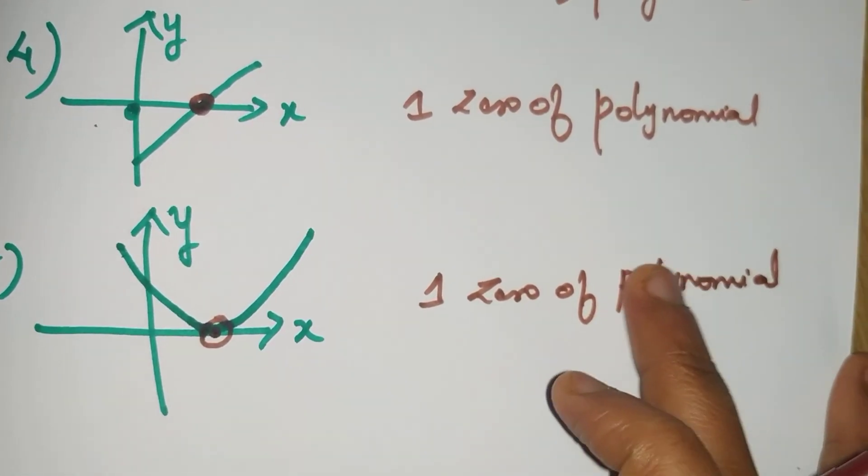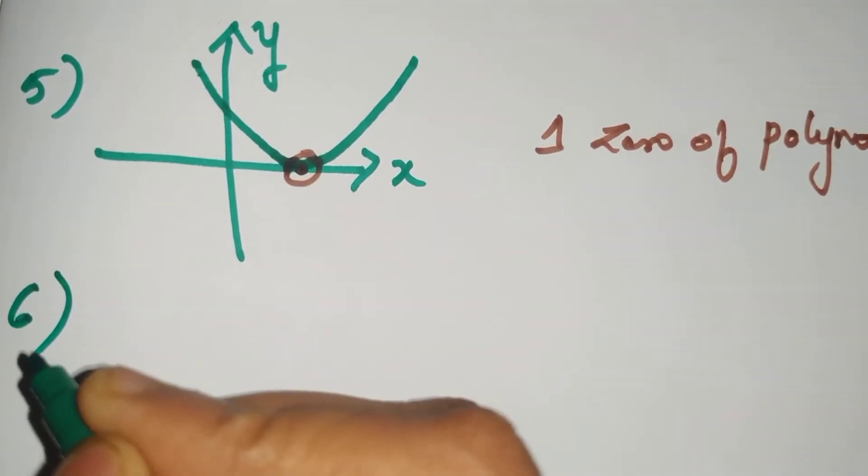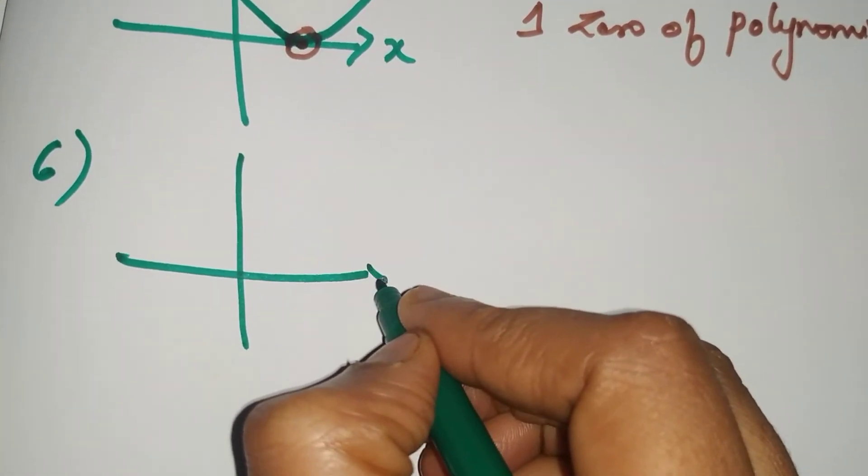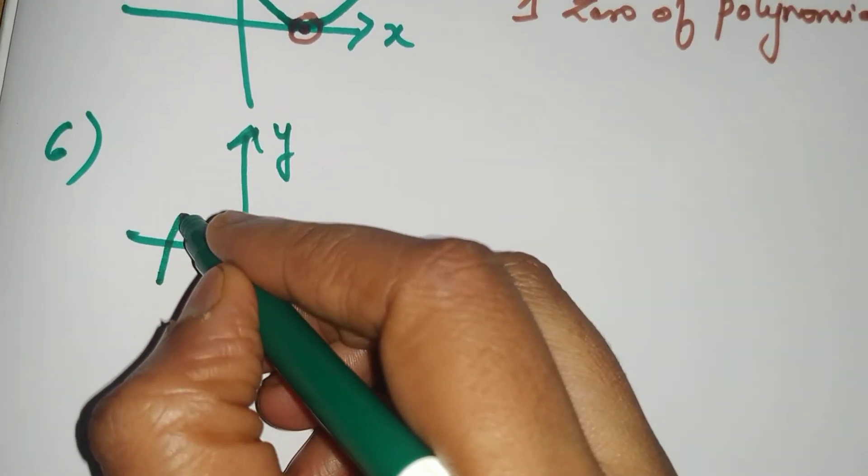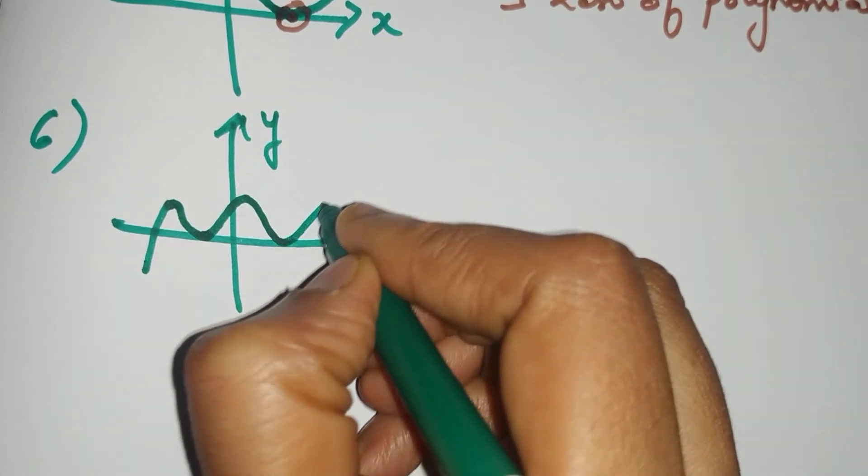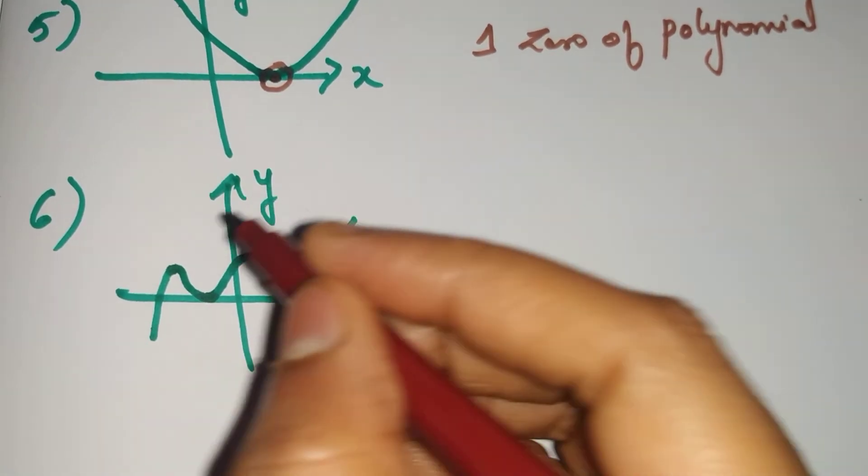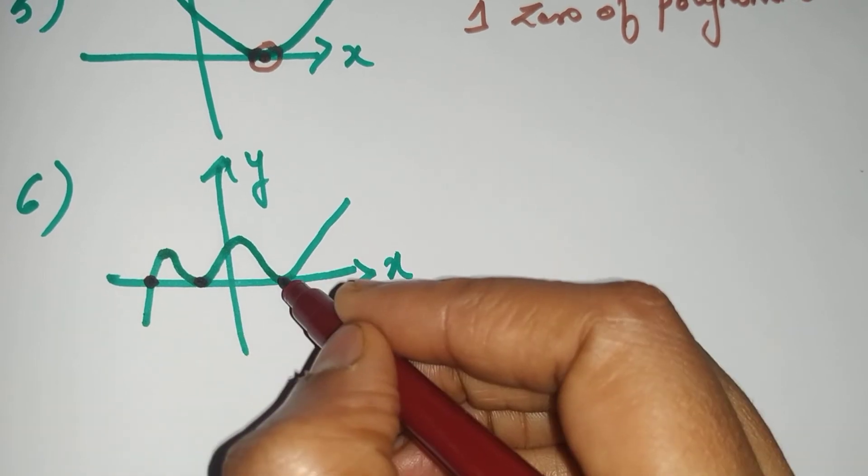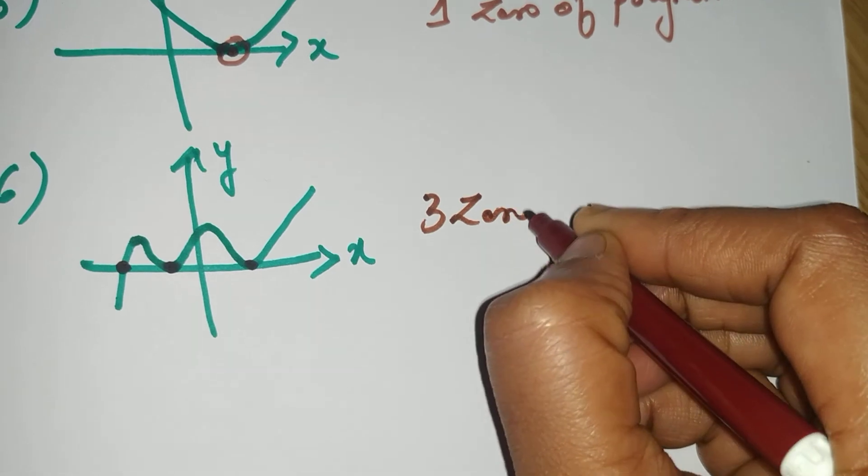The last problem we will see. Sixth question. You have a curve of this form. In this curve we have point number one, two, three. So we have three zeros of polynomial.